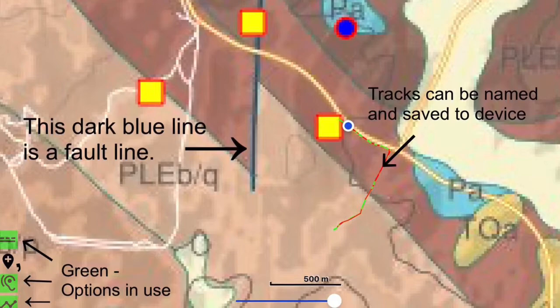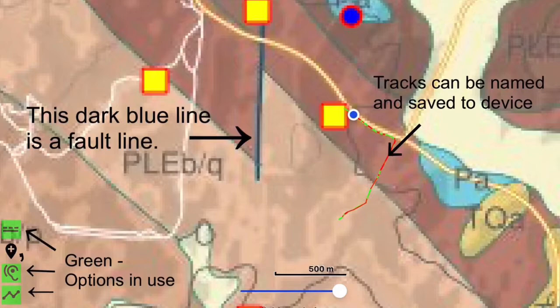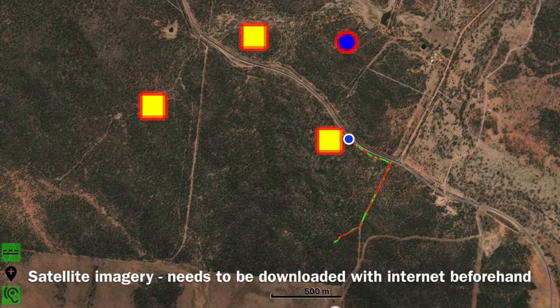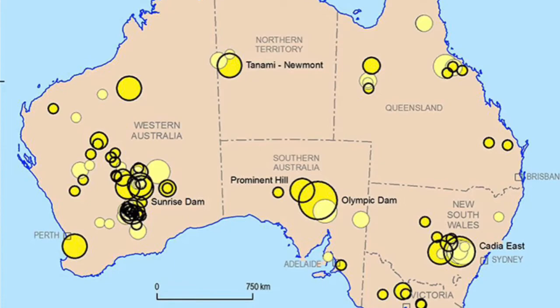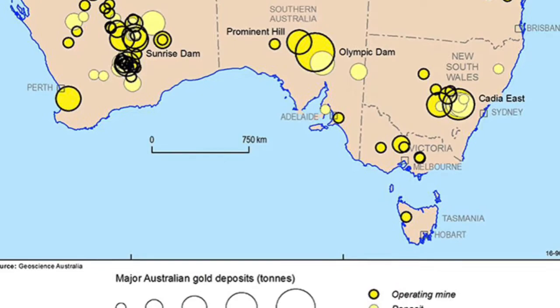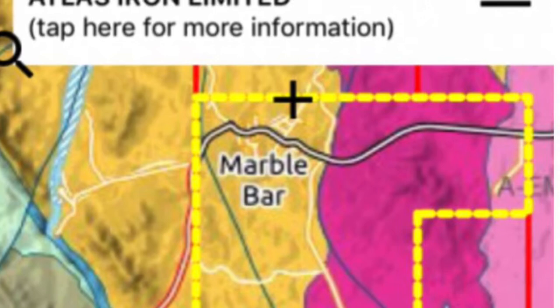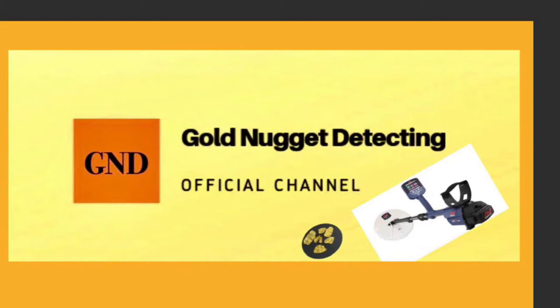This next snapshot shows on your left the options in green that are in use, the dark blue fault line, and the tracks that can be named and saved to the device. I found that if I downloaded the satellite imagery in town before I went out where there was no reception, I could still pick it up. The app covers options for each state in Australia — it only excludes the ACT. The Western Australian app covers live and pending tenements which is updated daily and other features. Well, that's it viewers — if you've enjoyed this video please give me the thumbs up, if you're not a subscriber please subscribe to my channel and feel free to share it with others.